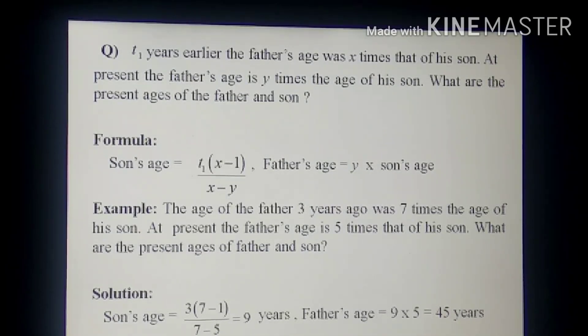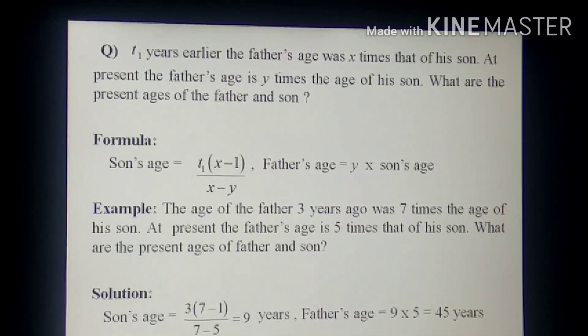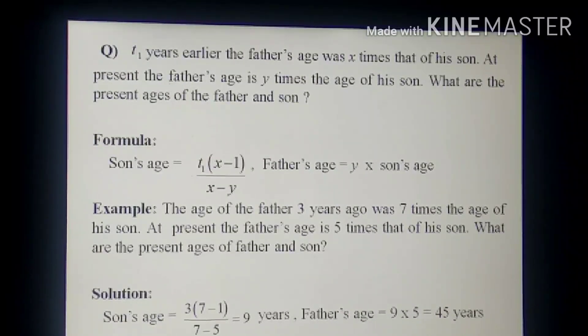The next problem is: T1 years earlier the father's age was X times that of his son. At present the father's age is Y times the age of his son. What are the present ages of the father and son?